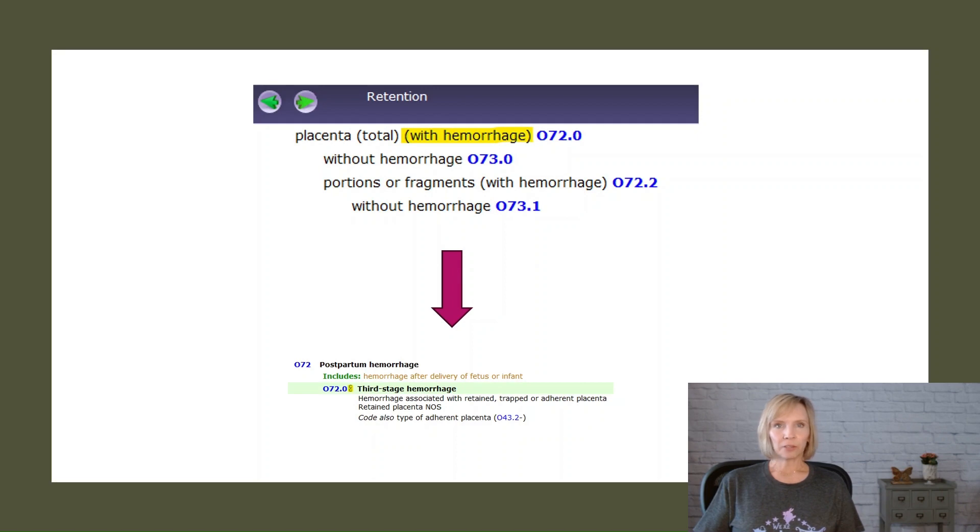For example, when coding a diagnosis of retained placenta, the term 'with hemorrhage' is enclosed in parentheses, making it a non-essential modifier for this condition. This means that the physician does not need to specifically document the presence of bleeding or third stage hemorrhage to be assigned.